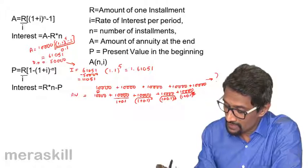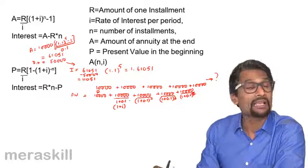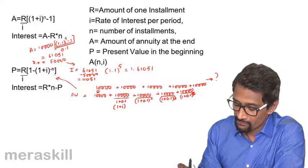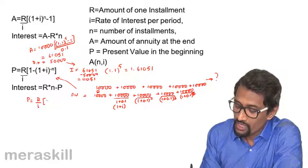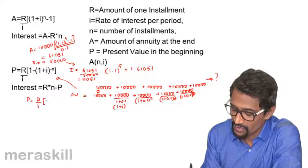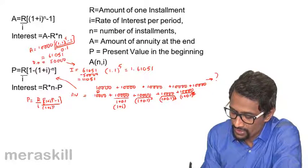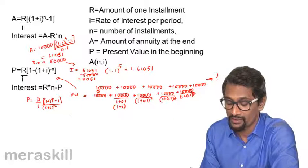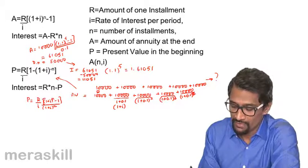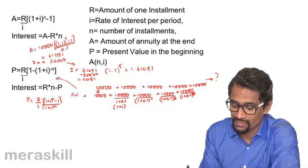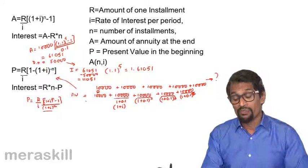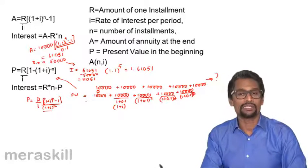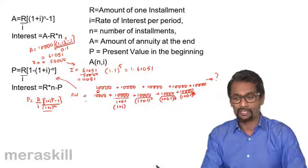Taking r and (1 plus i) as common and simplifying, the present value turns out to be r upon i into [1 minus 1 by (1 plus i) raised to minus n], which can also be written as r upon i into [(1 plus i)^n minus 1] divided by [(1 plus i)^n]. The future value is r by i into [(1 plus i)^n minus 1]; to get the present value you divide the future value by (1 plus i)^n. This is the difference between future value and present value of annuities made at regular intervals.